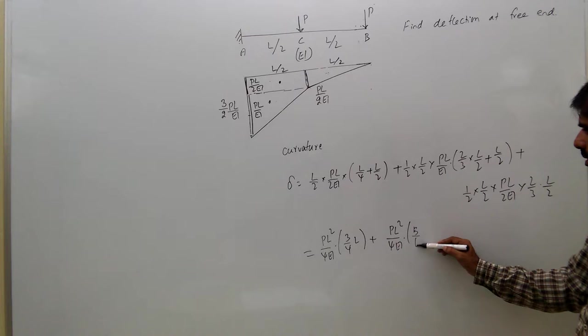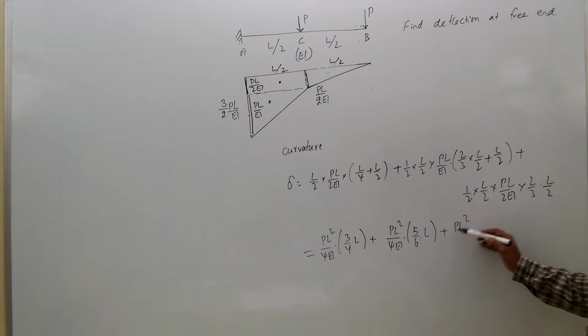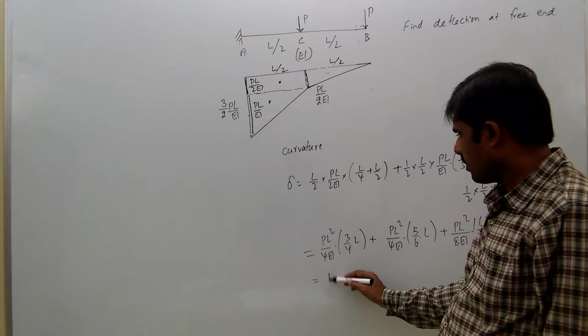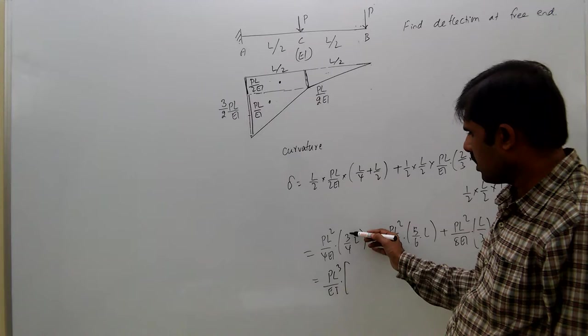Plus, 6 is the LCM, 5/6 L plus here PL²/8EI into two gets cancelled, L/3.